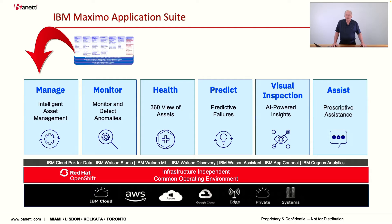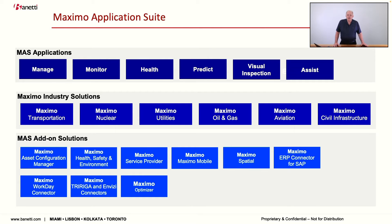What was Maximo Asset Management is now the Manage application on the Application Suite. Additional applications include Monitor, Health Predict, Visual Inspection, and Assist — all delivered on a single common platform that can be deployed on cloud (AWS, IBM, Azure) or on local premises. The industry solutions and add-ons from previous sessions are all still there, ported into containerized platforms, with these new applications layered on top.